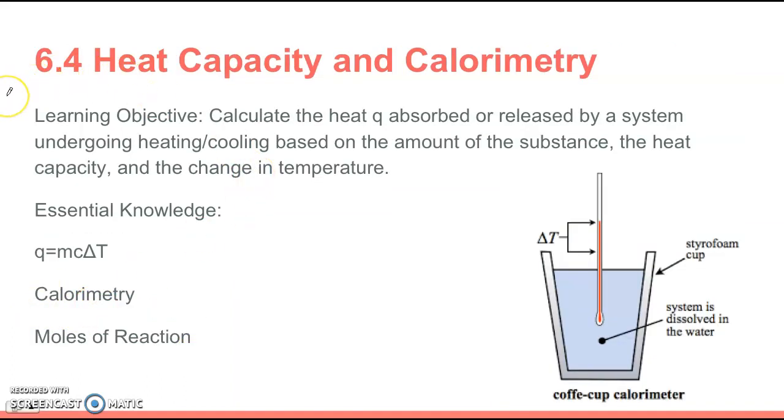The last section for today is on heat capacity and calorimetry. The learning objective is calculate the heat Q absorbed or released by a system undergoing heating or cooling based on the amount of the substance, the heat capacity, and the change in temperature.